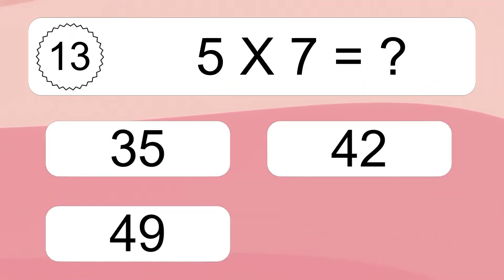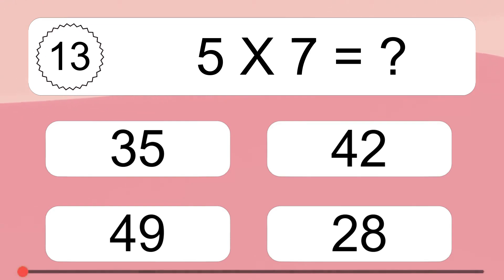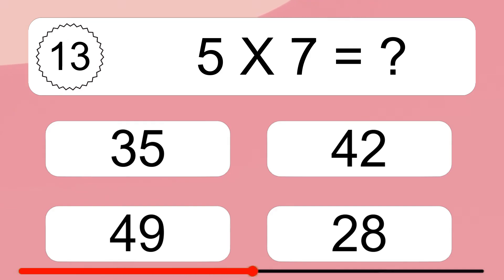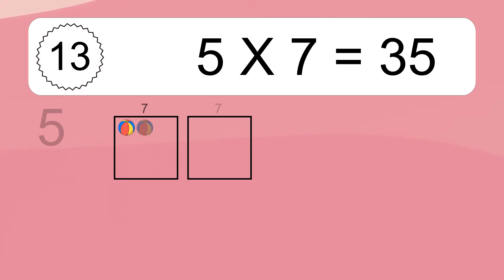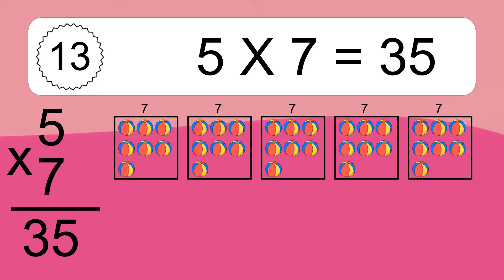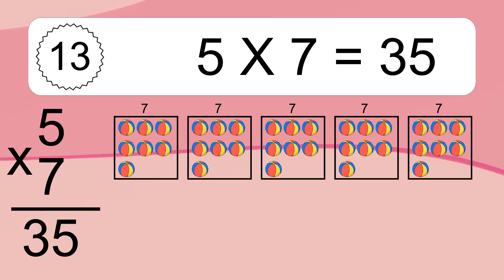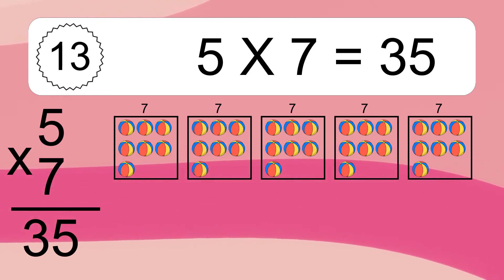5 times 7 equals what? 5 times 7 equals 35. We have 5 boxes, and each box has 7 colorful balls inside. If you count all the balls in all the boxes together, you will have 5 times 7 balls. This equals 35 balls.